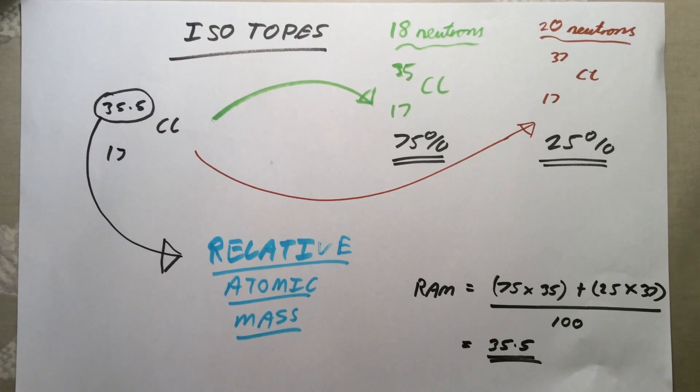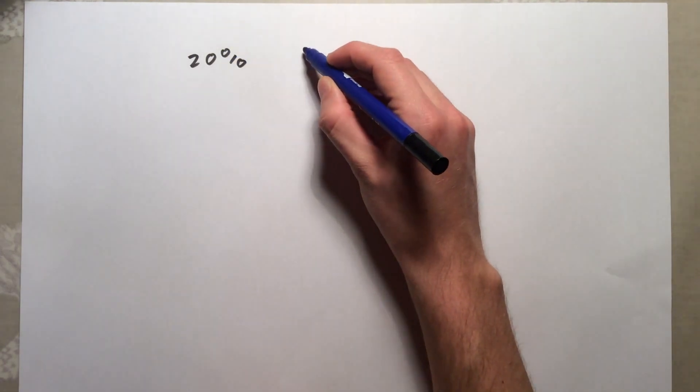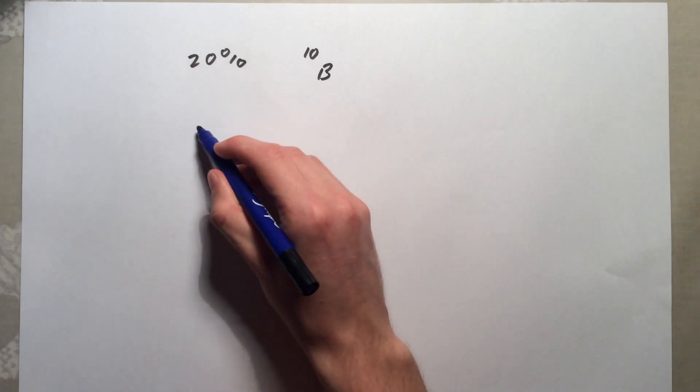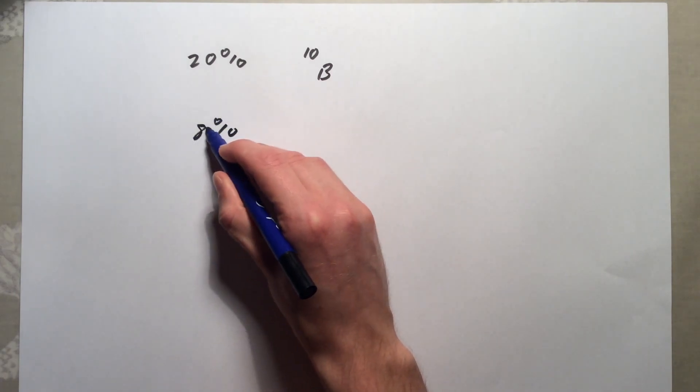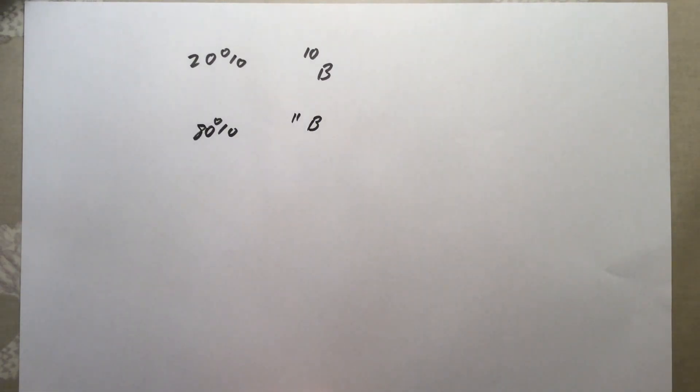Just to really reinforce and practice this, we're going to go through a couple of examples that you could get asked on your exam. The best way for you to go away and practice these is to Google relative atomic mass or isotope calculations. I'll put some links up. You should be able to find some online to practice. In this particular question, we are told that there are two isotopes of boron. Naturally there is 20% of boron-10 and there is 80% of boron-11. And we are asked to calculate the relative atomic mass of this sample of boron.